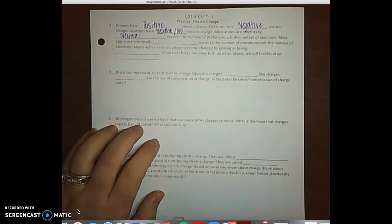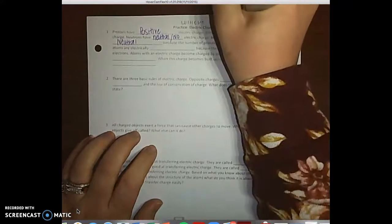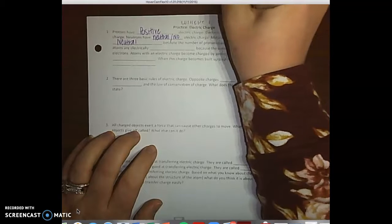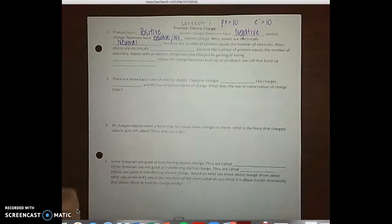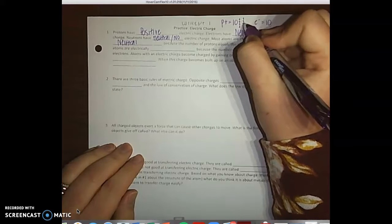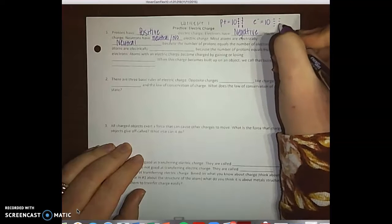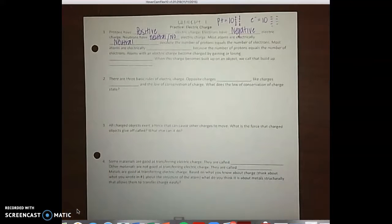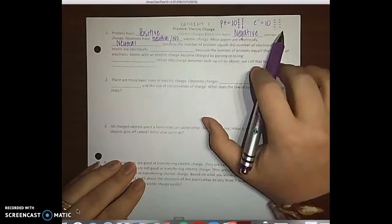Because the number of protons equals the number of electrons. So what that means is if you have let's say ten protons and you have ten electrons, that means you have ten positive charges and ten negative charges. So you have the same amount of protons and electrons, so they're balanced.